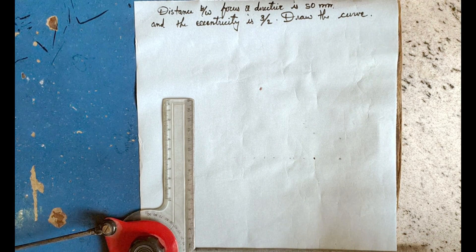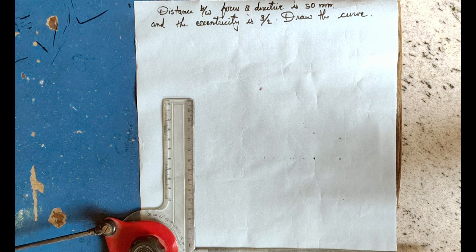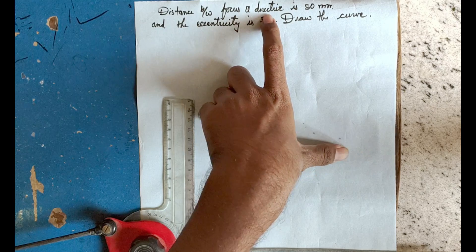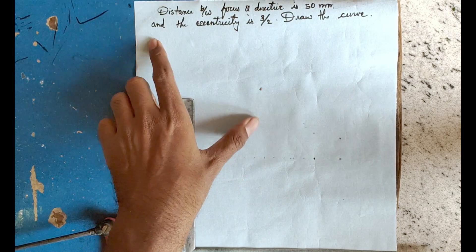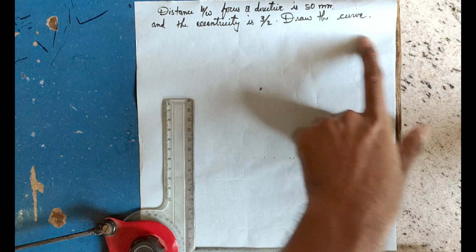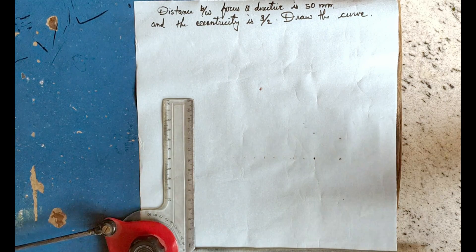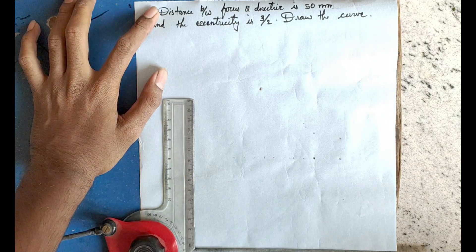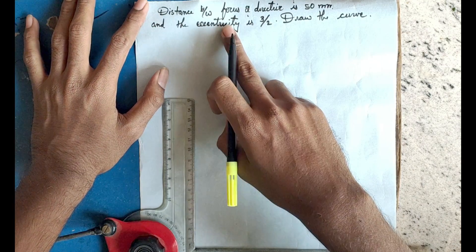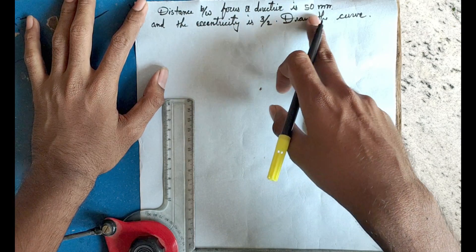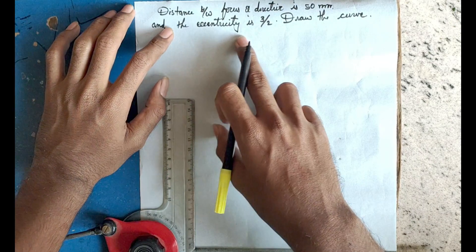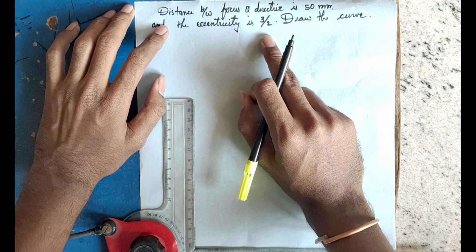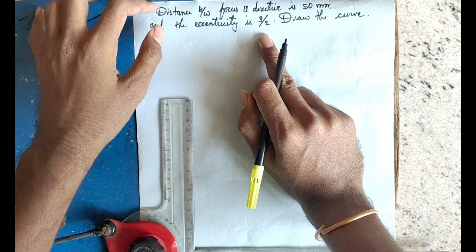Welcome to Civilian Telugu. Today's topic is how to draw a hyperbola. The distance between the focus and directrix is 50mm and its eccentricity is 3 by 2.